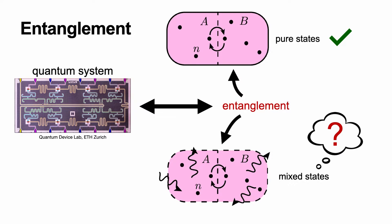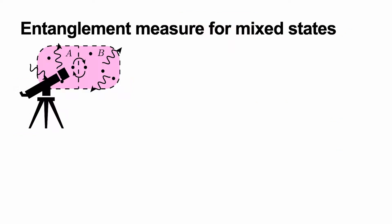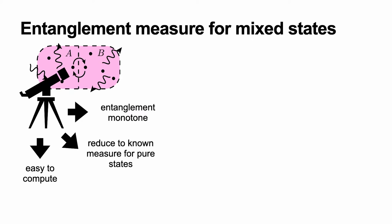When I talk about measuring entanglement for pure or mixed states, what do we actually mean? We want something like a telescope to look at this bipartite quantum system and tell us about the quantum correlations between the two parts. A good measure should fulfill three things: it should be an entanglement monotone, meaning local actions on one subsystem should not influence the entanglement measure. It should also reduce to some known measure for pure states. And finally, it should be easy to compute analytically or at reasonable computational cost — otherwise it's not very useful.